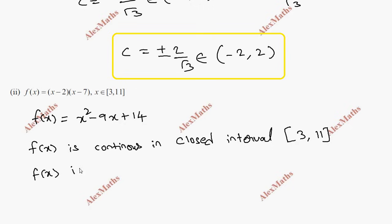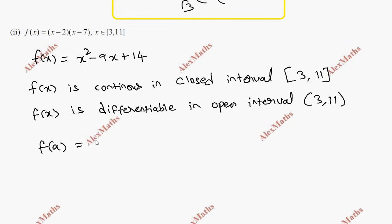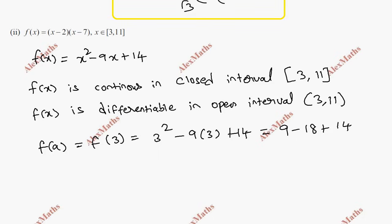There exists a value c between 3 and 11. Now computing f(a) = f(3) = 3² - 9×3 + 14 = 9 - 27 + 14 = -4. So f(3) = -4.